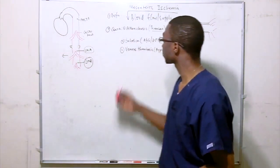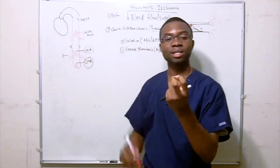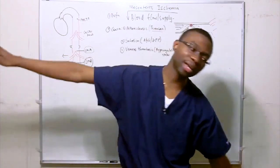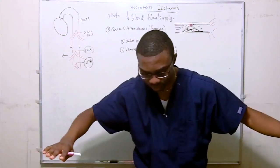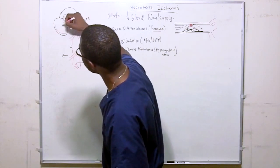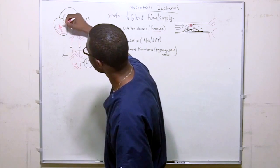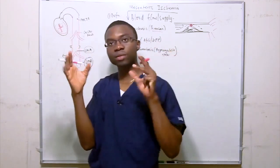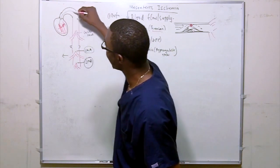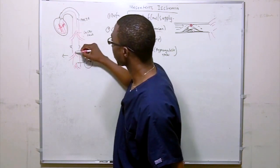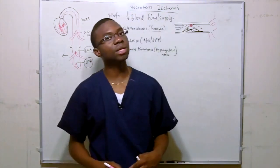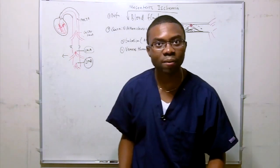The second cause is embolism — a clot that breaks off and travels. If you have atrial fibrillation and your atrium is quivering, you can form a clot. That clot jumps into the left ventricle, over the aorta, drops down, and blocks off the arterial supply to the superior mesenteric artery. You get ischemia.